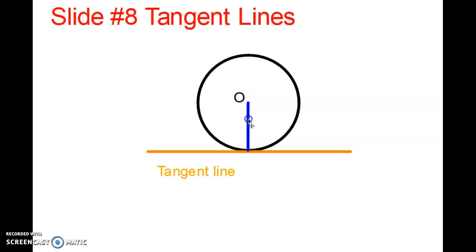I'm going to drop down a radius and as you can see, it is perpendicular. So that's our theorem that a tangent line and you draw a perpendicular to the point of tangency. This is going to be 90 degrees.